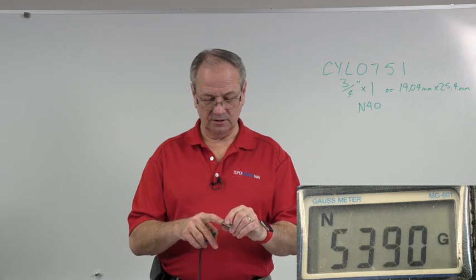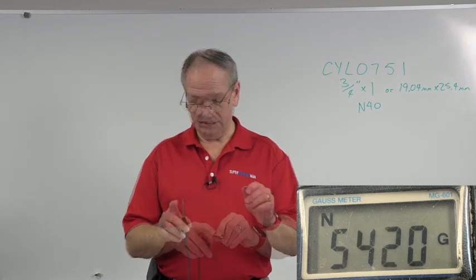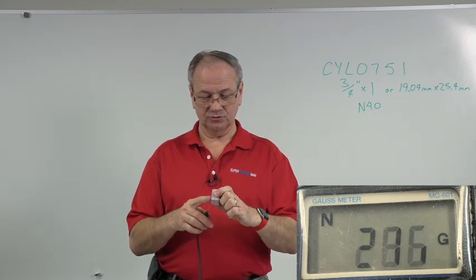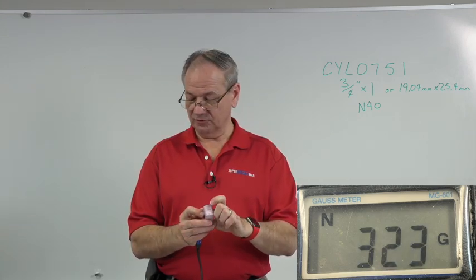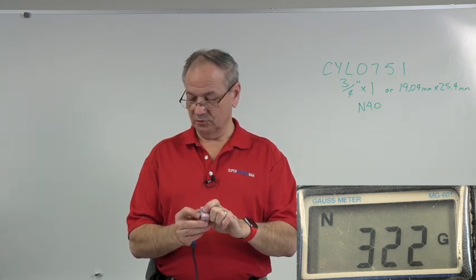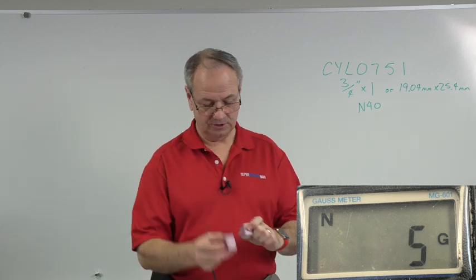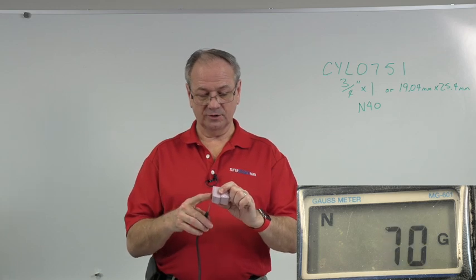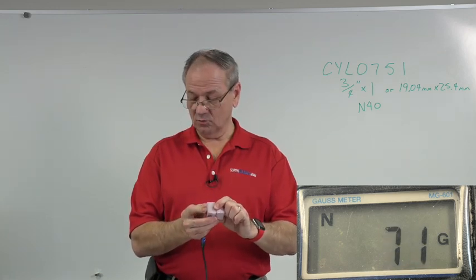The surface reading on this is 5,420 gauss. If I move away from the surface and I use a spacer that's about 23.7 millimeters thick and I get away from the surface, it's reading 320 gauss. And if I add another spacer and I get 47.4 millimeters away from the surface of the magnet, we're down to 71 gauss.